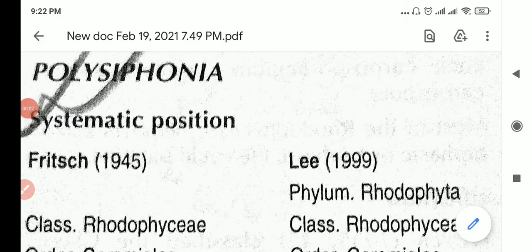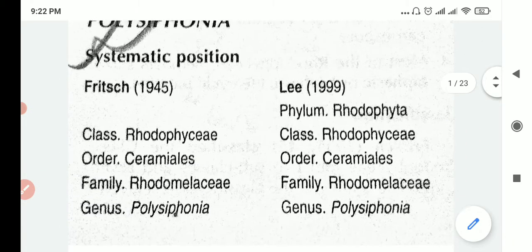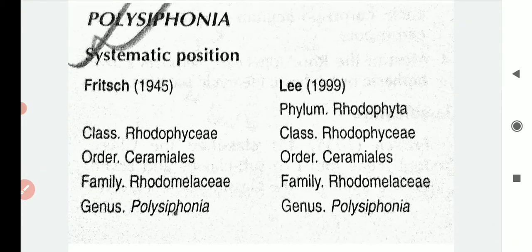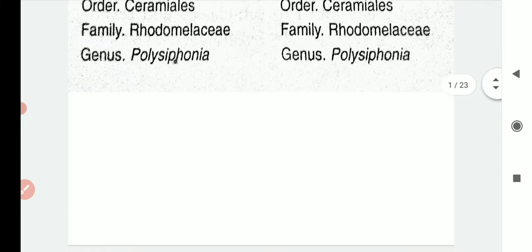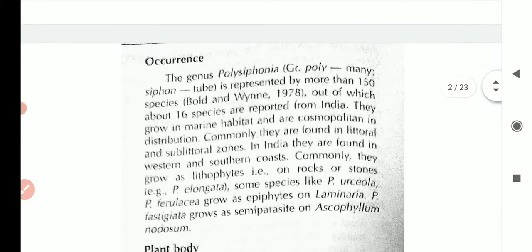Let us go according to your syllabus. Since I've already introduced you to Polysiphonia and red algae, you will know what to expect on Monday. Now let's look at the systematic position — you can see the phylum, class, order, family, and genus. Since you've already done classification of algae, you know better, so let's start immediately with the occurrence.